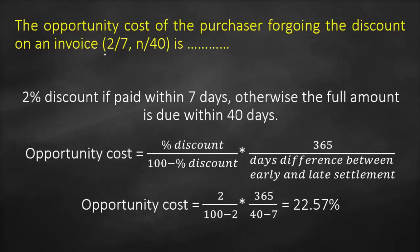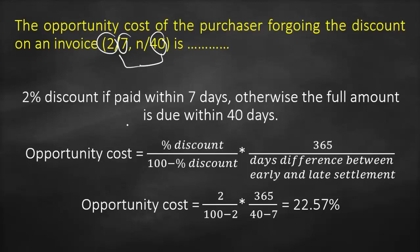Applying the numbers: 2 divided by (100 minus 2), multiplied by 365 divided by (40 minus 7). This gives us 22.57%.